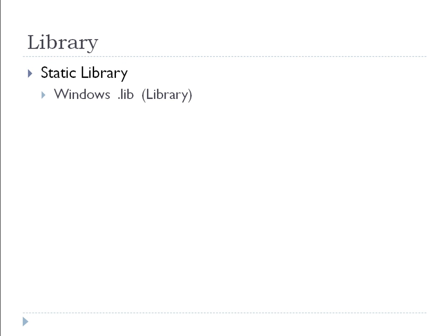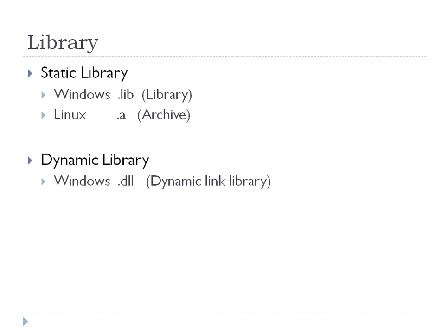For static libraries: in Windows, any file with a .lib extension is a static library. In Linux, a library with a .a (archive) extension is a static library. Dynamic libraries in Windows are known as .dll — dynamic link library. In Linux, it is .so. Thank you for watching.